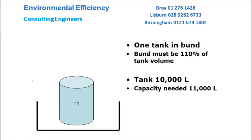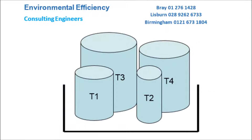Bonds have to have sufficient capacity to contain the volume likely to be released in an instant. For a single tank, the general rule is that the bond must contain 110% of the tank volume. Where there is more than one tank in the bond, the general rule is more complex and this will be covered in a later video.